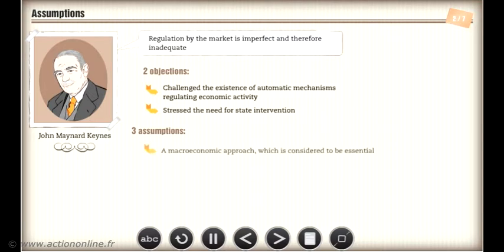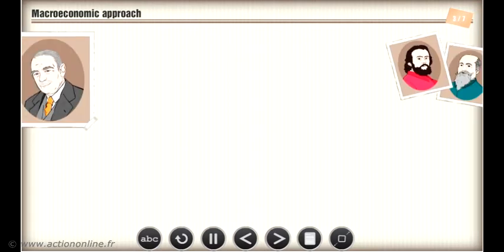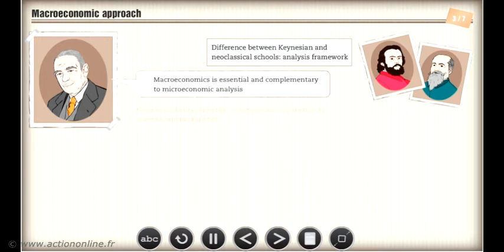These three assumptions are: a macroeconomic approach, which is considered to be essential; an underemployment disequilibrium; and the return of economic policymaking. The fundamental difference between the Keynesian and neoclassical approaches is the analysis framework they employ. Keynes considered macroeconomics to be essential and complementary to microeconomic analysis. Keynesian theory develops macroeconomic function by macroeconomic function, rather than market by market. We can represent the logical flow of Keynesian analysis in a model diagram.